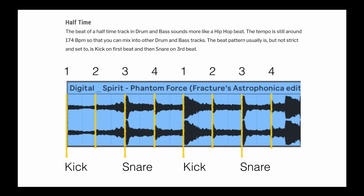The next beat is the half-time beat. Here we have an eight-beat bar — one, two, three, four, one, two, three, four. What this means is that every snare is slightly slower — instead of the snare being on beats two or four, the snare is on beat three of each bar. This sounds like a hip hop beat, and in fact you can mix hip hop with drum and bass because the hip hop beat is pretty much half of a drum and bass track. So that's beat structures.